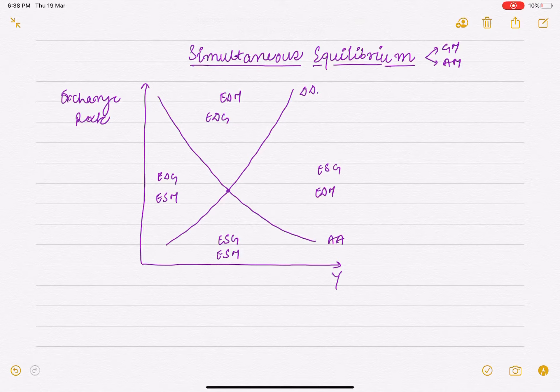This is the point of equilibrium where goods market and asset market both equilibrate. So short run equilibrium in the economy is determined when the AA curve and DD schedule intersect, because at the point of intersection, goods market and asset market both equilibrate simultaneously.